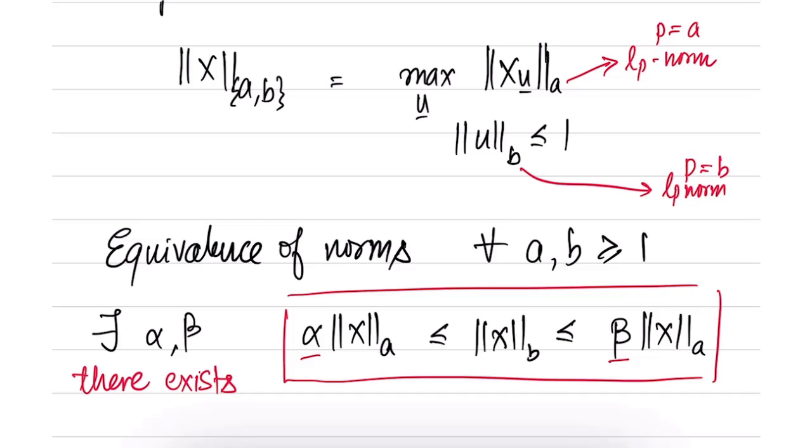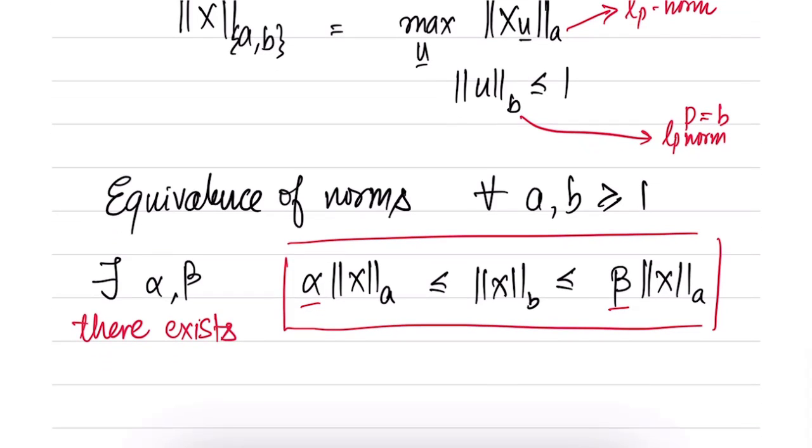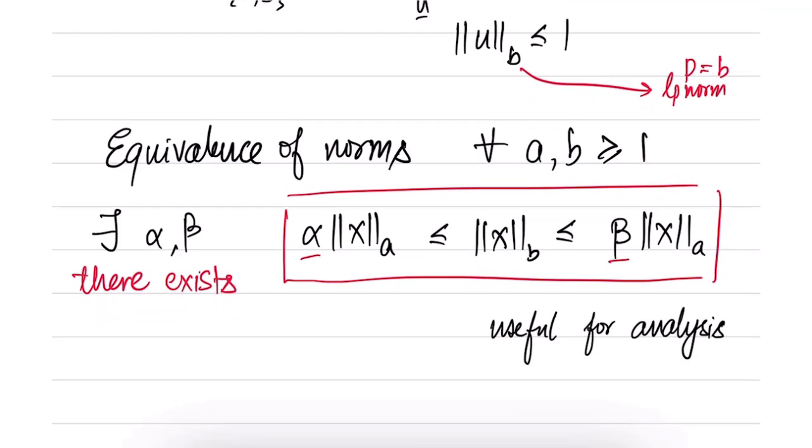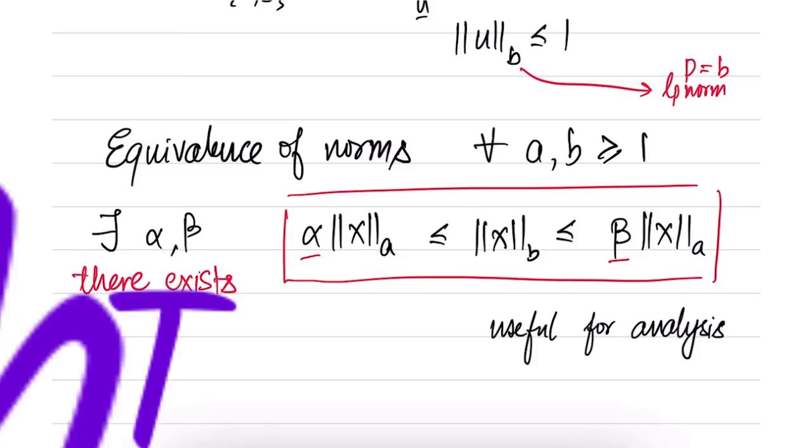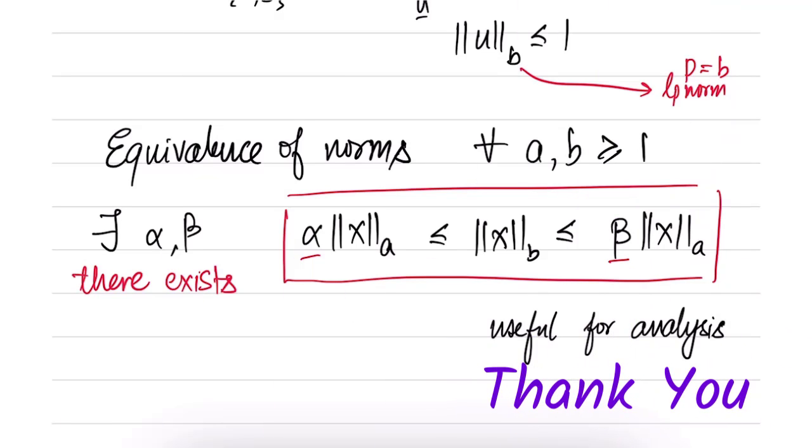This result is actually very useful for convergence analysis of algorithms, of optimization algorithms. So basically what it is saying is that if you can establish the result for one particular norm, then it is as good as doing it for all possible norms. This result allows some generalization.